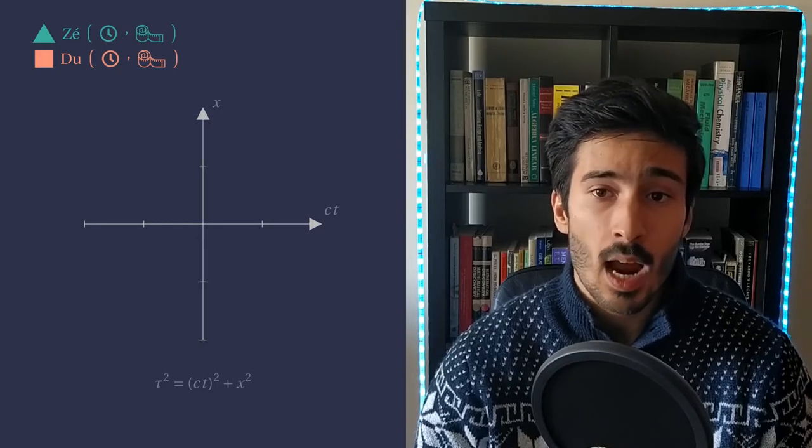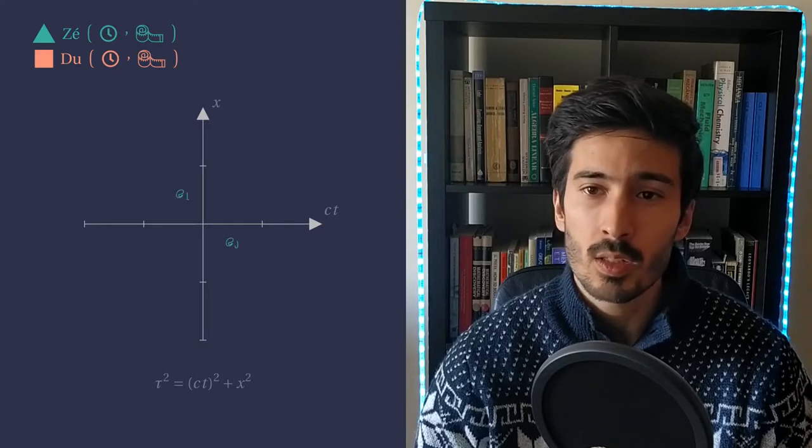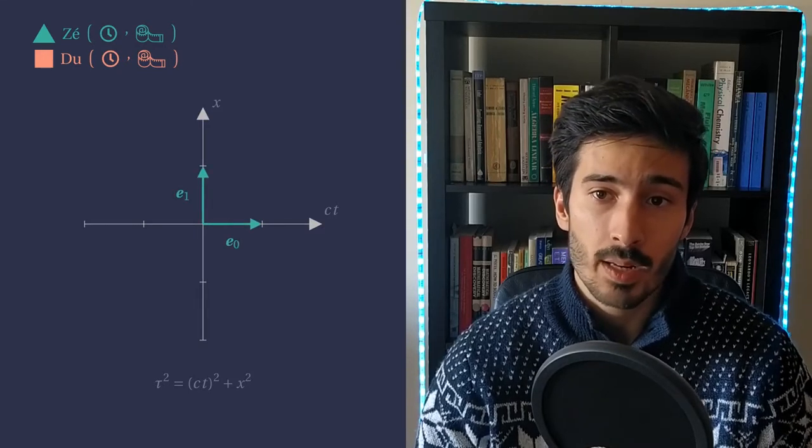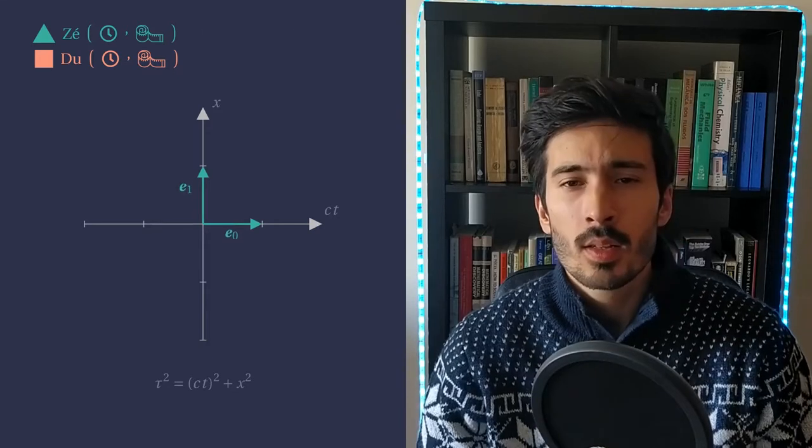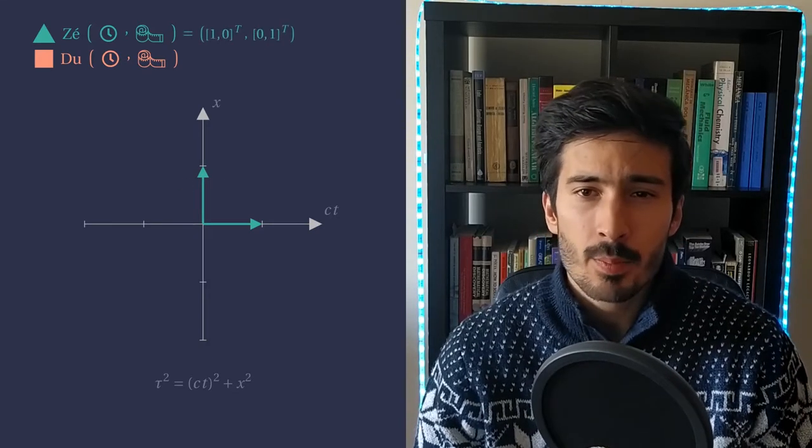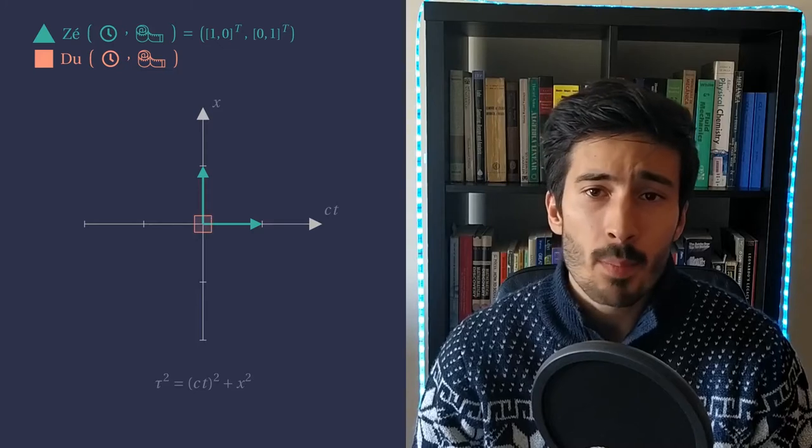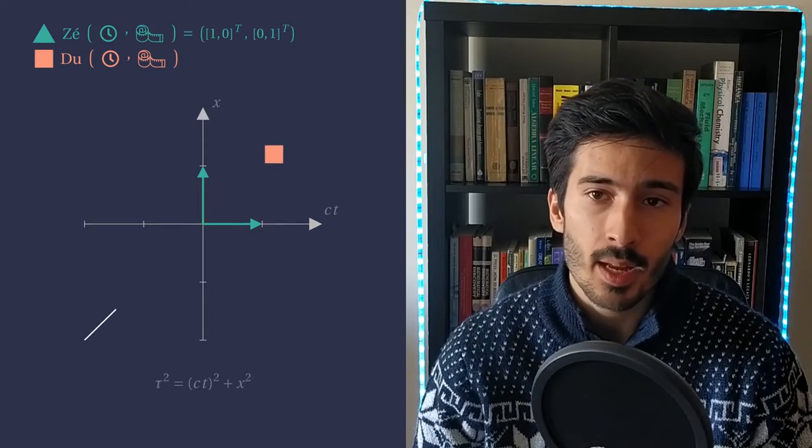Ze's clock and measuring stick are the two traditional unit vectors. They are orthogonal, since space and time are independent directions in spacetime. Now, what about Du? He is moving relative to Ze with a given velocity v, while in motion he traces a line in spacetime, his so-called world line.